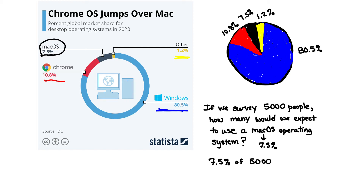So what we're really trying to do is take 7.5% of 5,000. When we see that word 'of,' we know what that means in math — that's multiplication. So we're taking 7.5% times 5,000. When we have a percent and we're going to multiply it, we first convert it into a decimal by moving two places to the left. So that means we have 0.075 multiplied by 5,000, which yields 375 — the total number of people we would expect to use a Mac OS operating system from this survey.